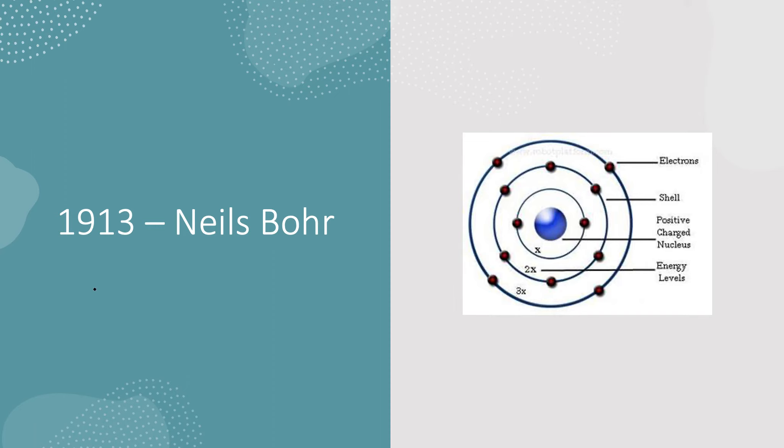This is where Niels Bohr comes in in 1913. He knew that the electrons orbit the nucleus and he figured out that the shells are there, the electron shells. And these electrons are on those electron shells and they're orbiting the nucleus. We have this positively charged nucleus in the center of the atom and this nucleus contains protons. And around the nucleus are these shells, energy levels which are holding the electrons and are orbiting the nucleus.